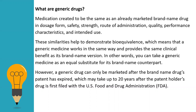However, a generic drug can only be marketed after the brand name drug's patent has expired. I have mentioned the patenting process in another video called 'Life Cycle of Medicine,' which I'll link here for reference. The patent process can take up to 20 years after the patent holder's drug is first filed with the U.S. Food and Drug Administration, the FDA. Without FDA approval, no drug can make it to market, and there are different rules laid down by the FDA to check the safety and efficiency of the drug.